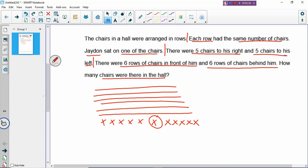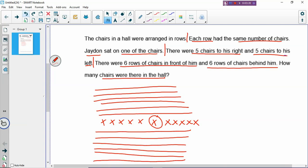Now there are 6 rows behind him, so you just draw 6 lines: 1, 2, 3, 4, 5, and 6. Not a very nice picture, but I think it's enough for us to solve the problem.